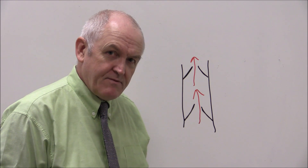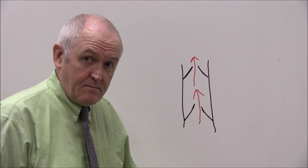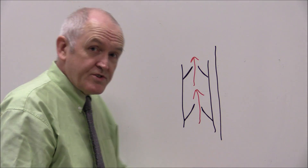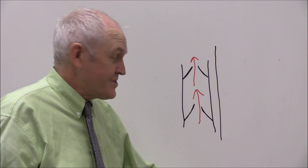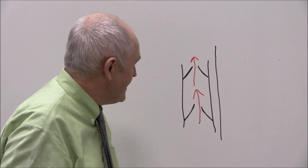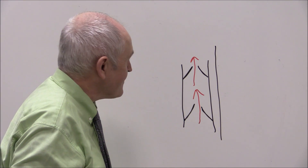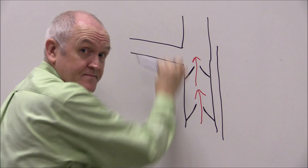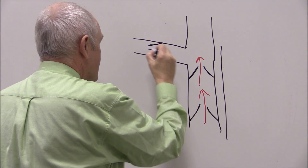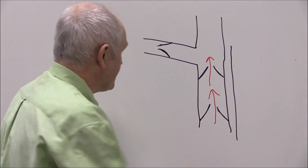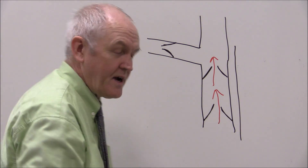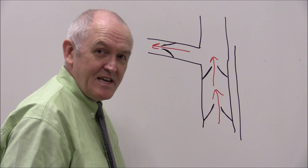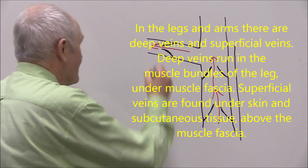What people don't always appreciate is that there are actually two systems of veins in the legs and indeed two systems in the arms. The one drawn here is near the surface of the skin — these are the superficial veins, the ones you can see through the skin and which are very useful in the arms for taking blood samples. But there are also deeper veins that go inward, again with valves, taking blood from the superficial to the deep venous system.